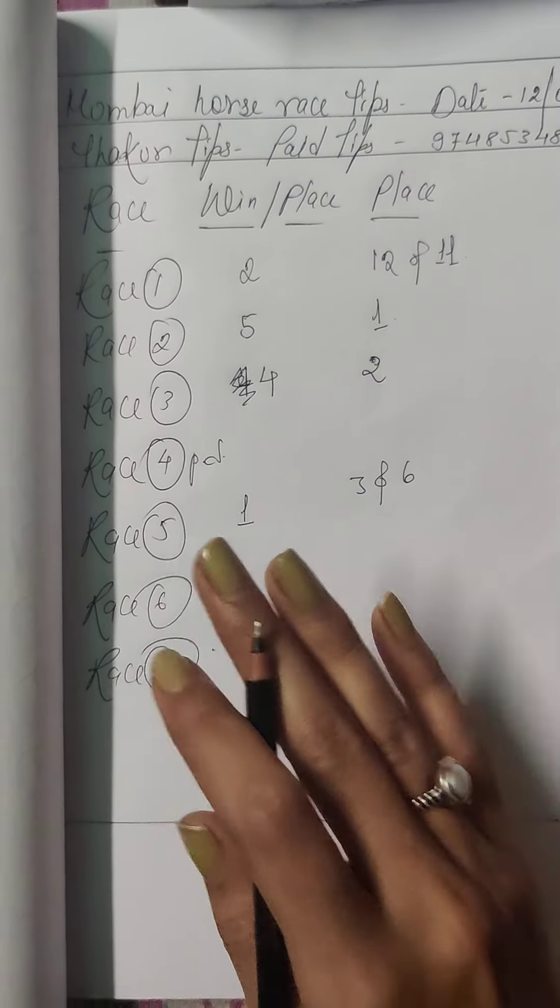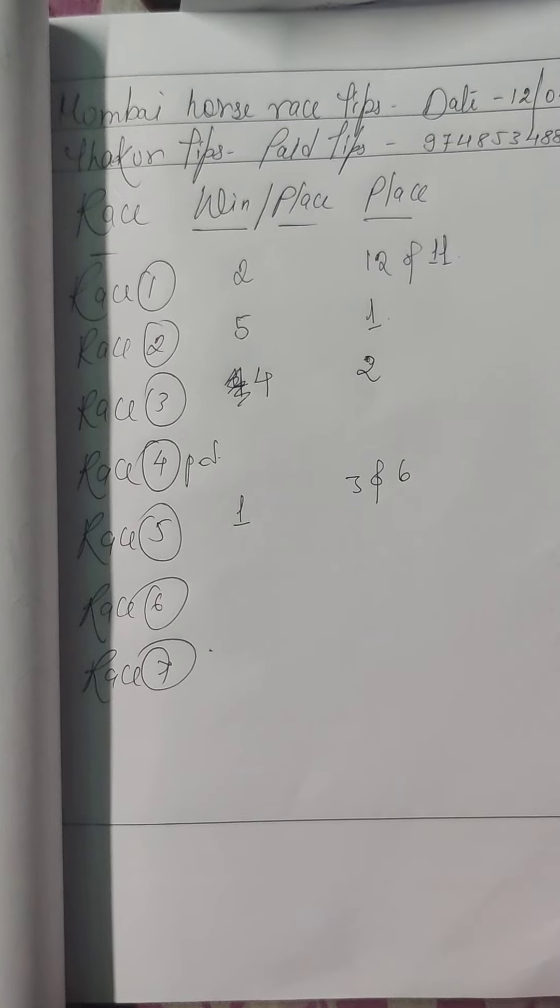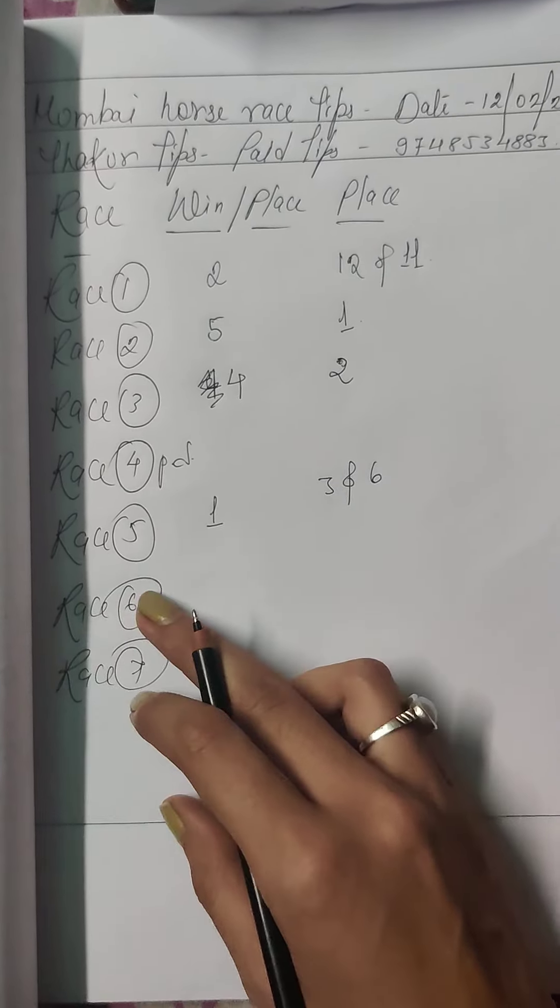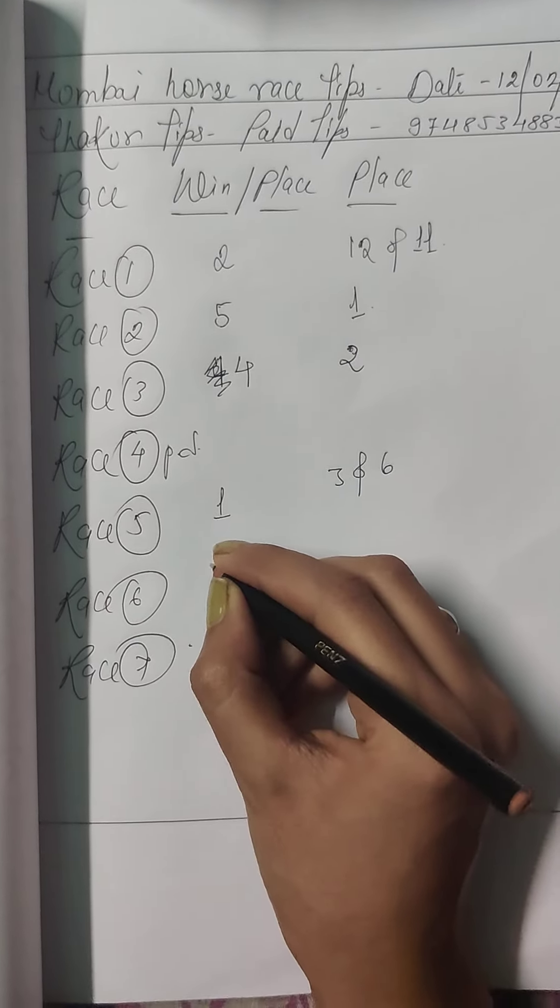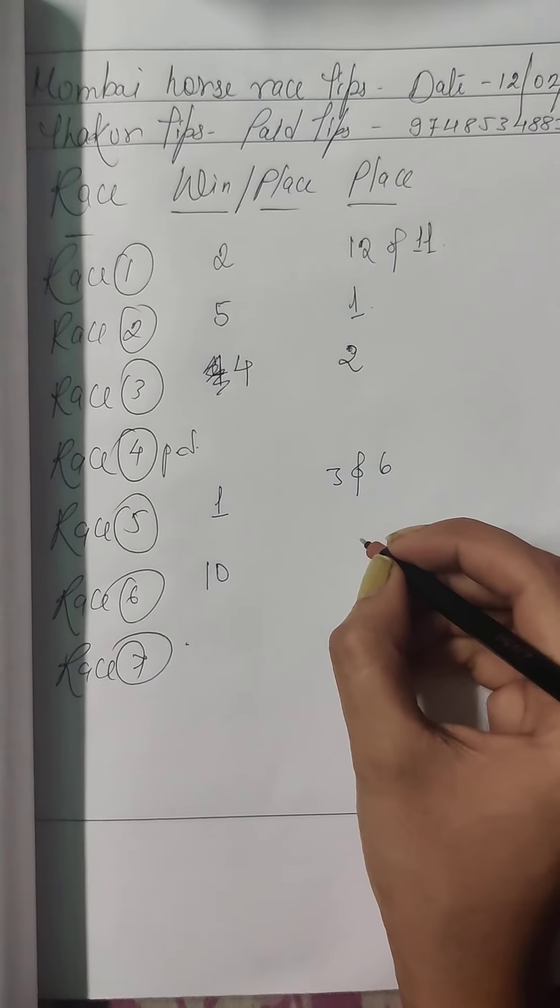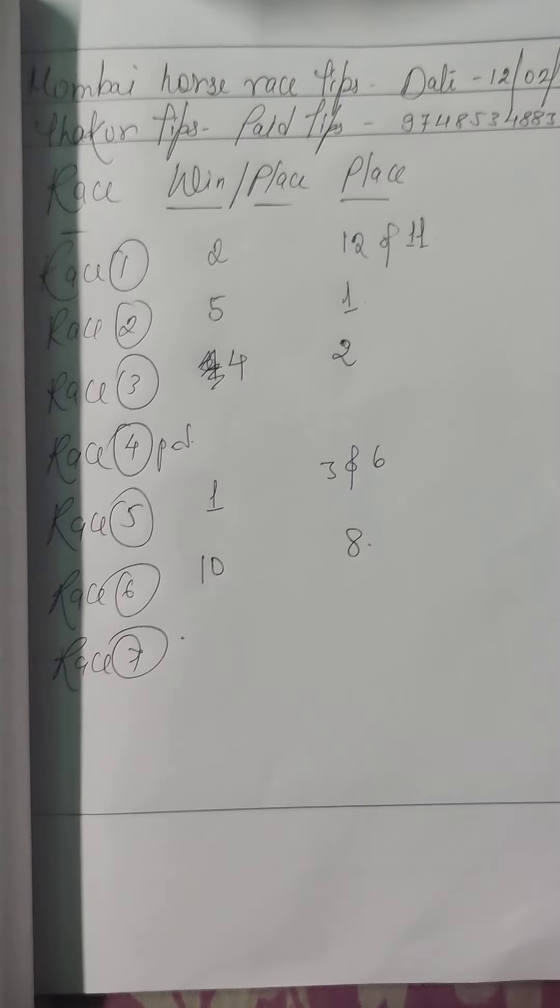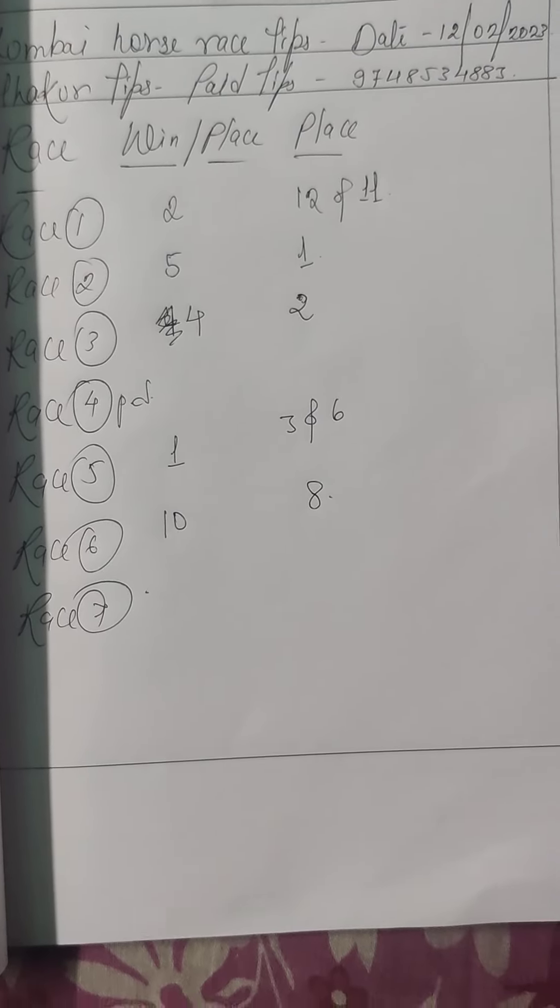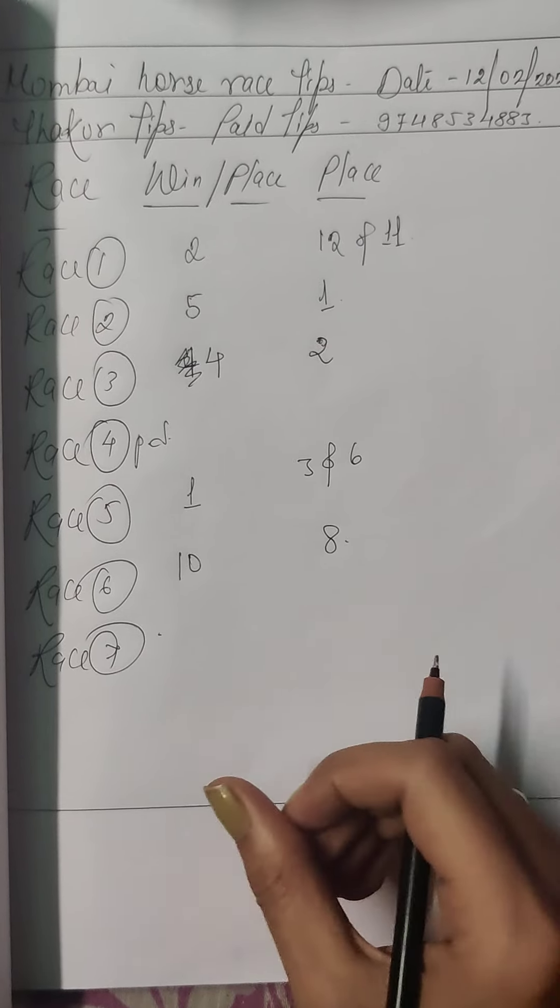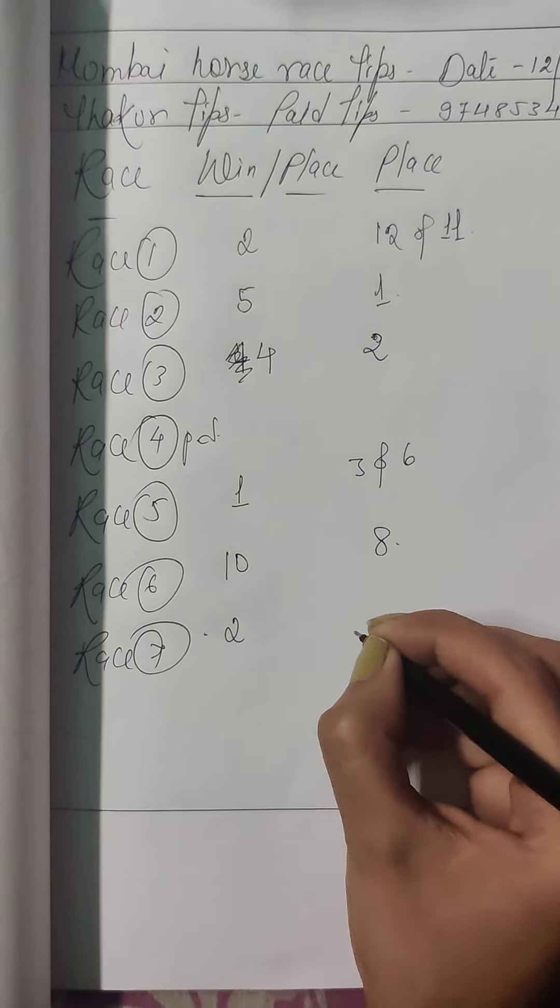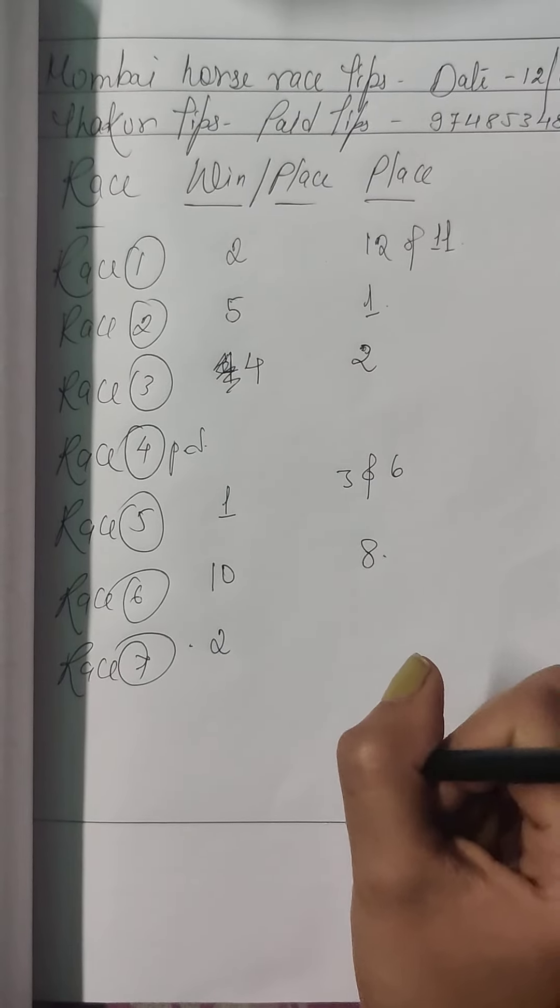That's why I am uploading a video, so show some love to our channel and support. In race number 6 my first choice is horse number 10, my second choice is horse number 8. In race number 7 my first choice is horse number 2 and my second choice is horse number 10.